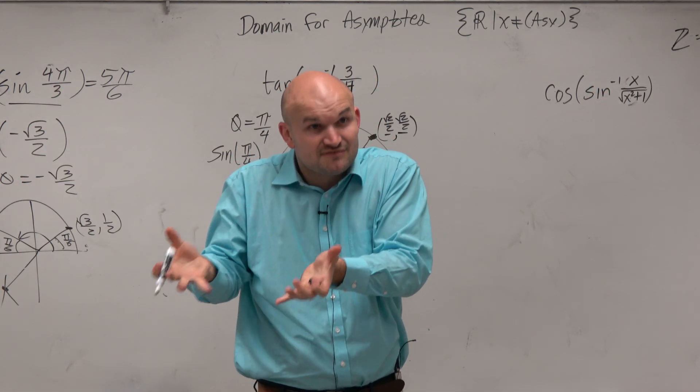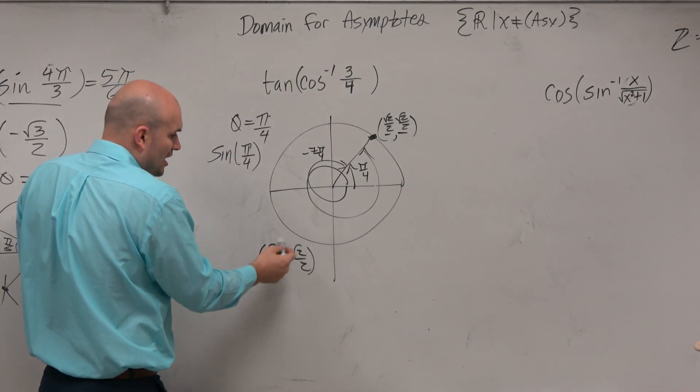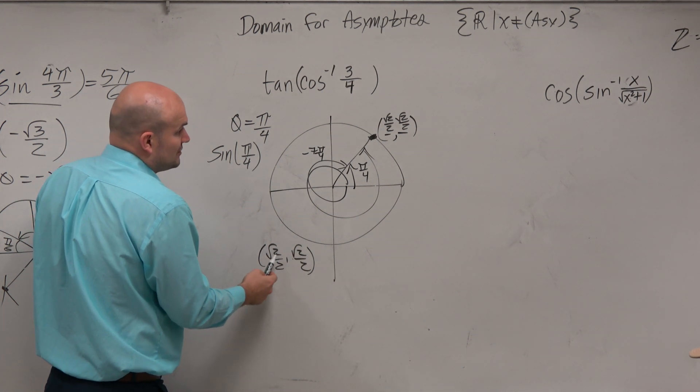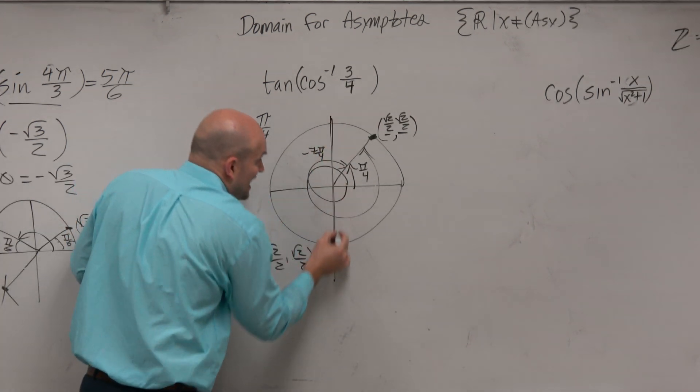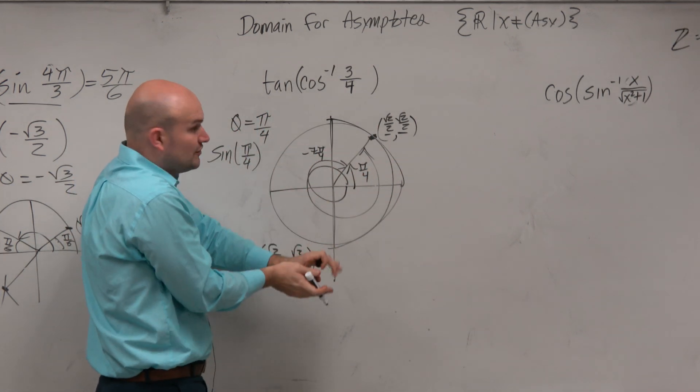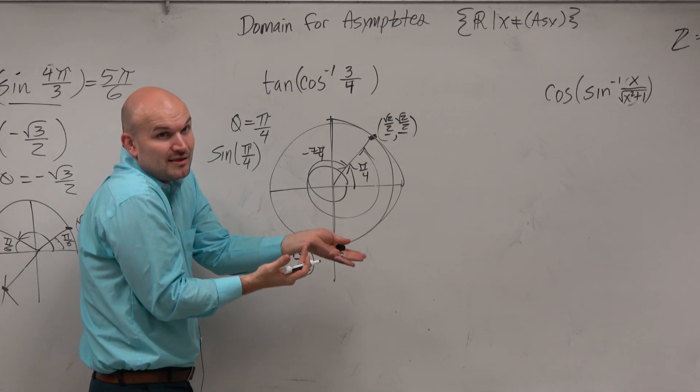So to satisfy this relationship to be a function, we restrict this. We say, all right, if I was going to say the angle, then we restrict it. So for sine and cosine, we restrict it, saying you can only give me an angle that's within the first and the fourth quadrant. And therefore, there's only one angle now that works.